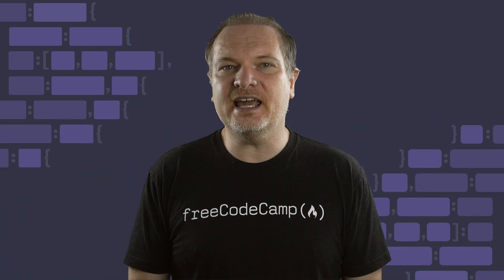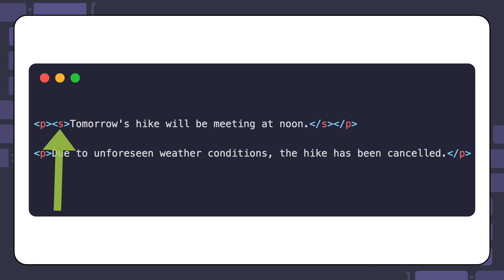Here is an example of using the S element to show the cancellation of an activity. In this example, the first sentence is crossed out because the hike has been cancelled due to weather reasons.